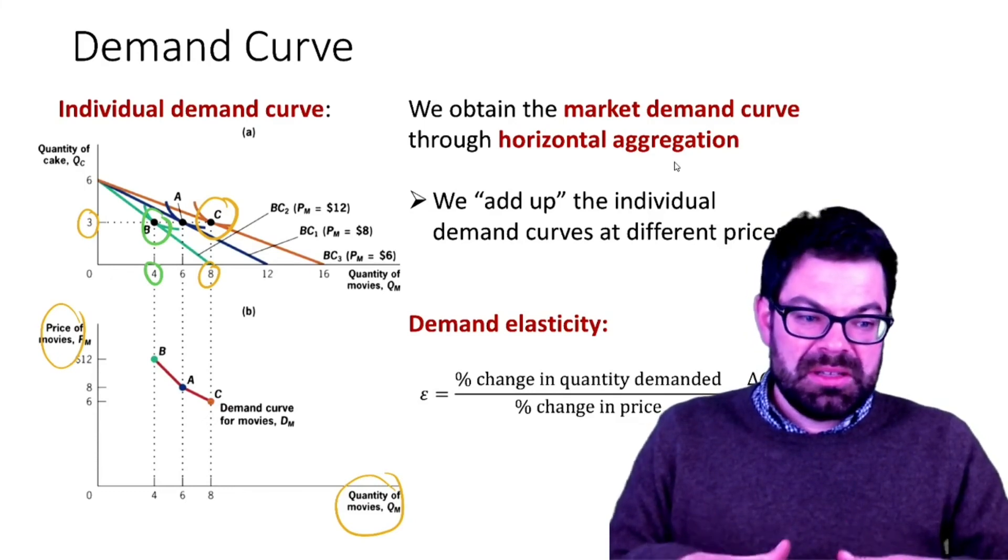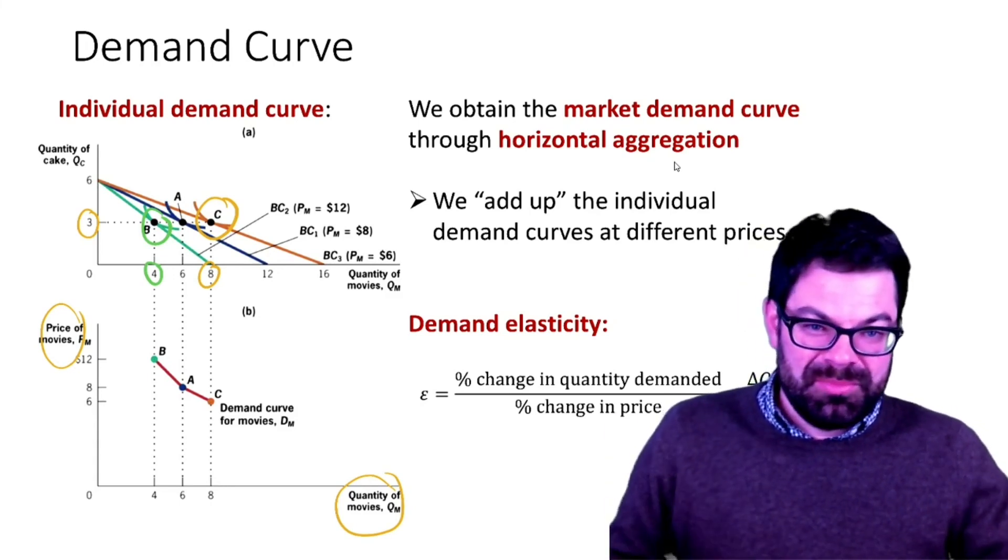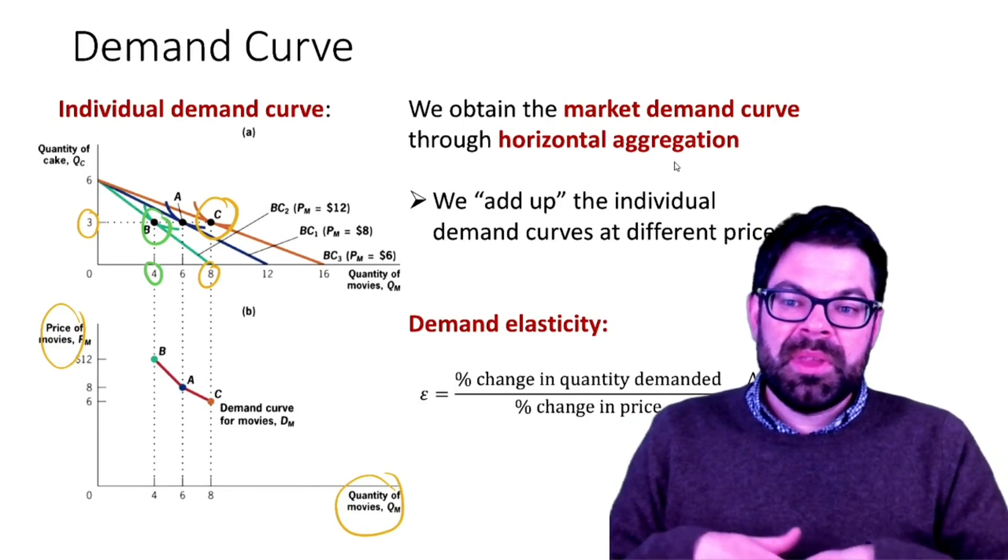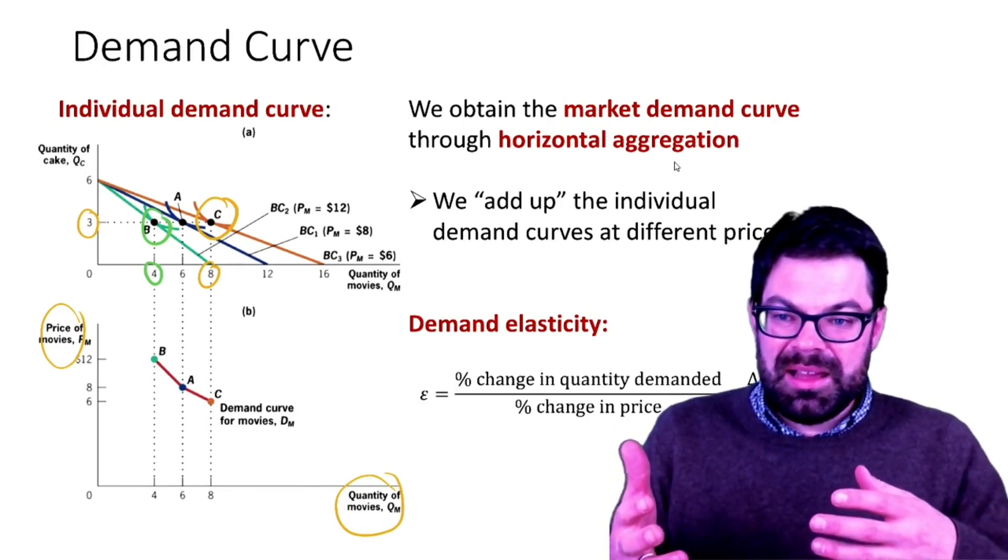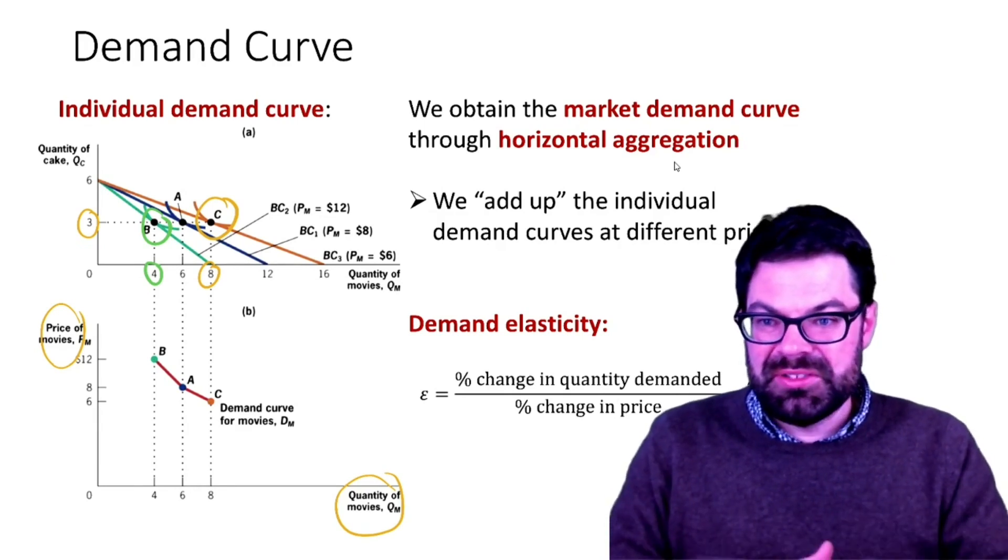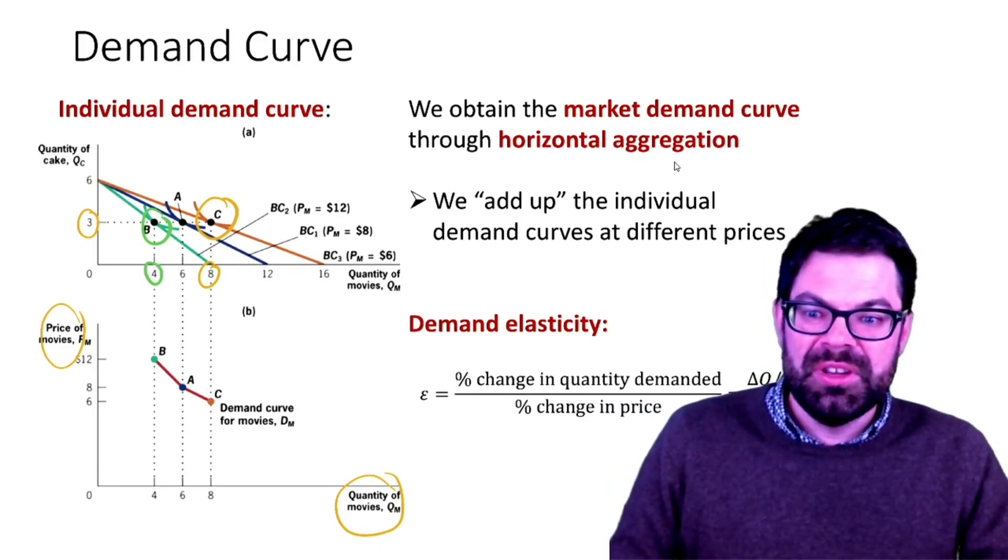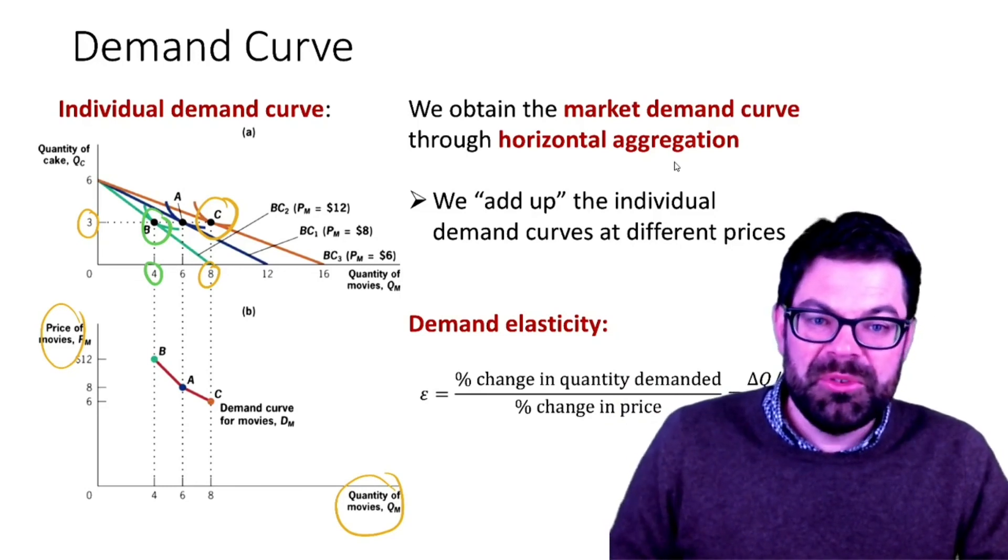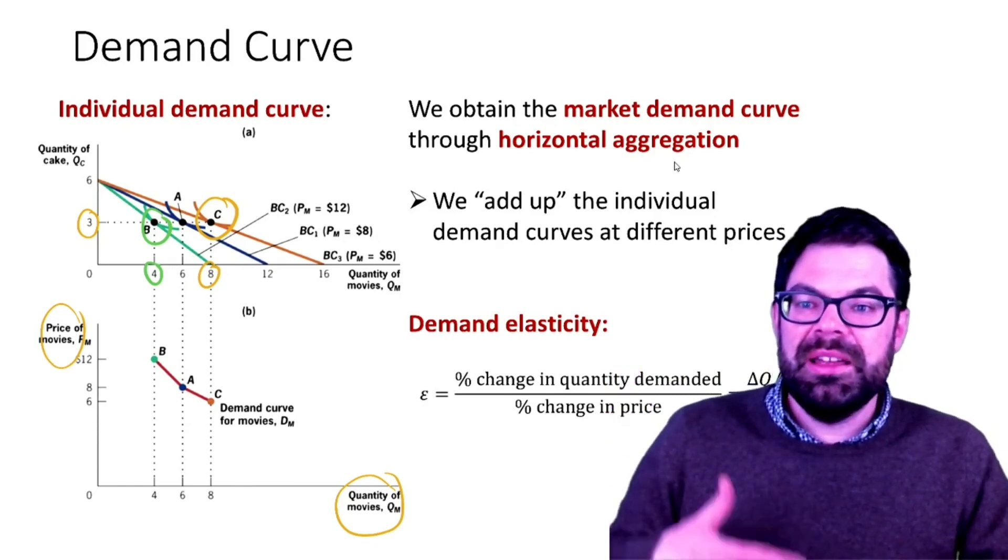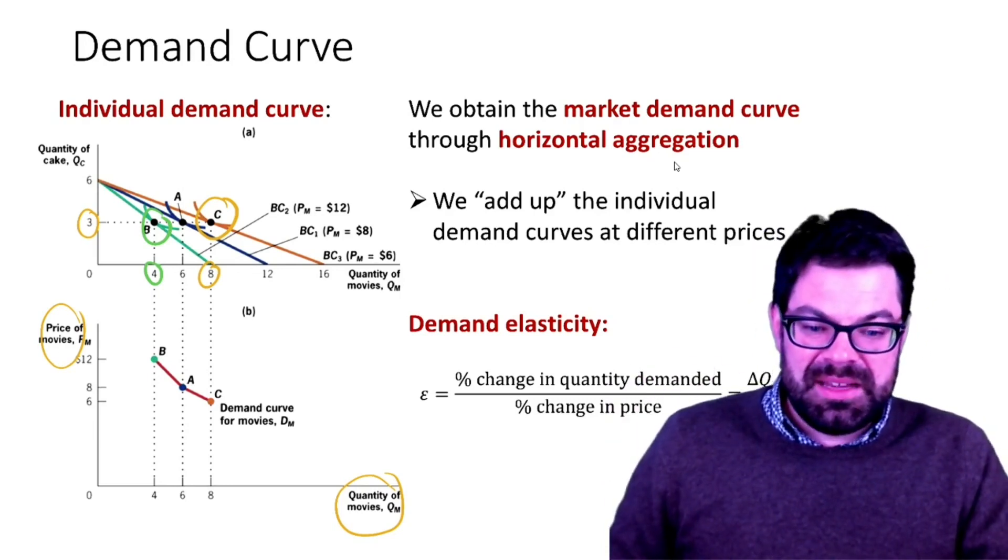We will need this later in the course in several instances because we will very often compare goods that are provided by the government, such as safety through the deployment of police force or the army or clean air, and compare the demand for these goods to the demand for private goods. For that we will need to know where the demand curve for a conventional private good such as cinema tickets or cakes comes from, and then we will compare that to so-called public goods—goods that are typically provided by the government and have certain characteristics that we will learn about at a later stage in the course.